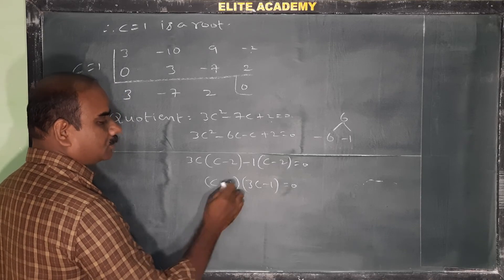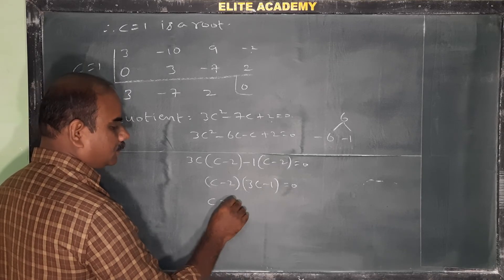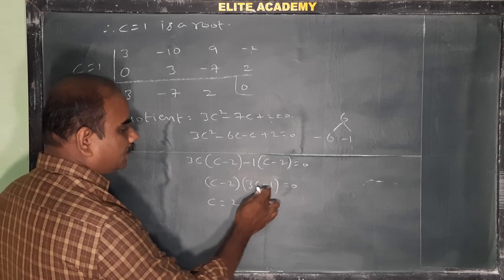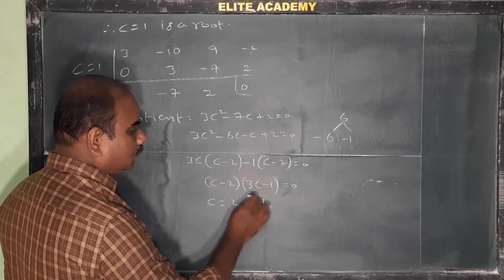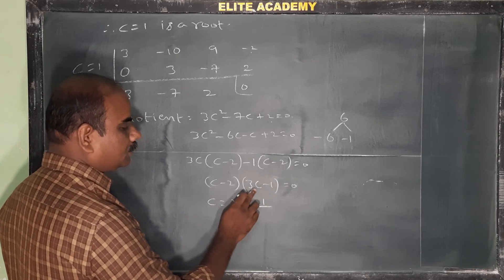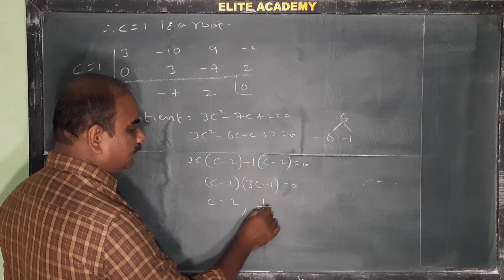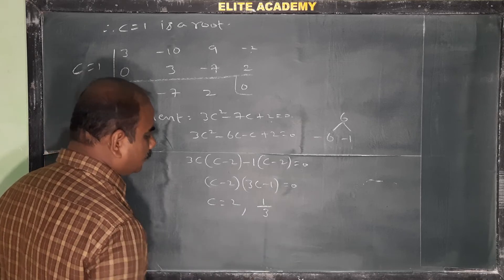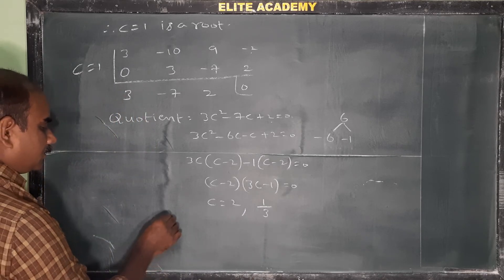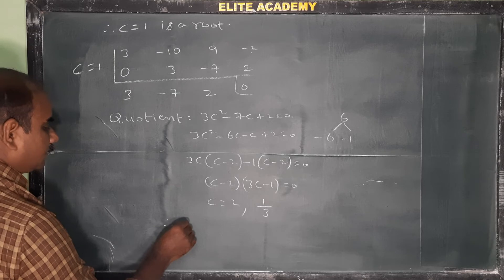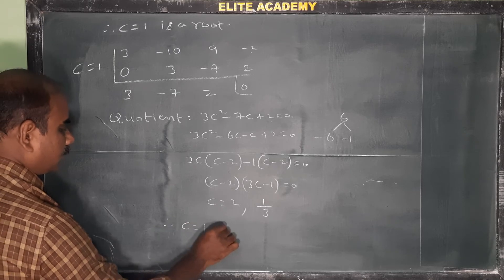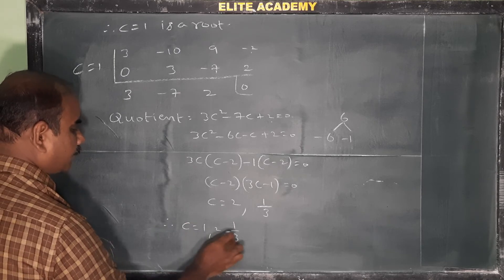From (c - 2)(3c - 1) = 0, we get c = 2 or 3c = 1, so c = 1/3. Therefore the three possible values of c are: c = 1, c = 2, and c = 1/3.